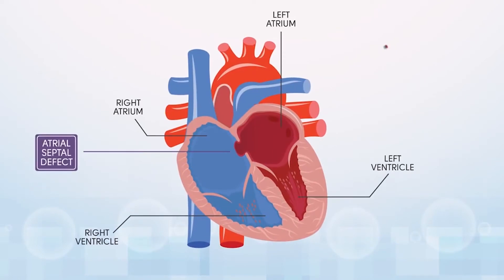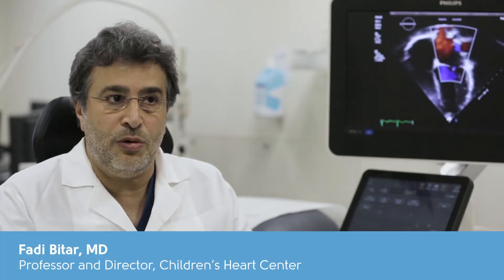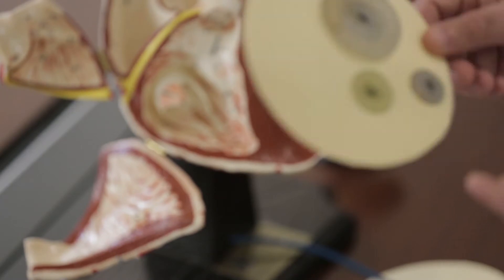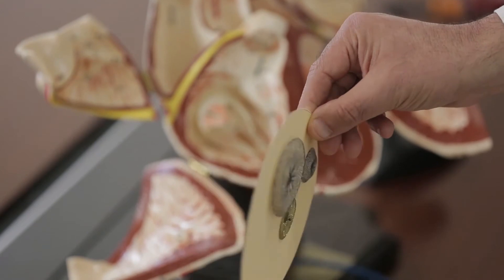Usually transcatheter technology utilizing umbrella-like devices are used to close the holes. In most cases, one device is used to close one hole. In few cases, one may use two devices to close two or multiple holes. In our patient, this was the first time in the world that we utilized three umbrella-like OculeTech devices to close three holes in our patient's heart.